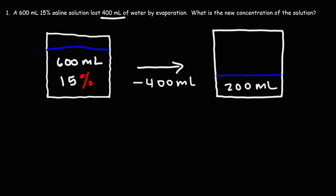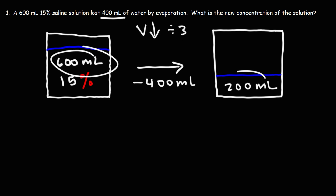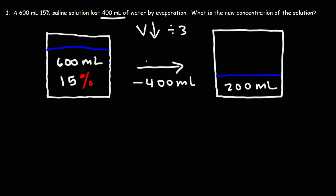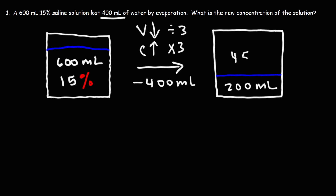What's going to be the concentration? Notice that the volume decreased by a factor of 3. If we go from 600 to 200, we need to divide 600 by 3 to get to 200. What that means is that the concentration is going to increase by a factor of 3. So if we multiply 15% by 3, the concentration of the new solution is 45%. And that's always going to happen with evaporation — evaporation is a process that will increase the concentration of the solution by the removal of the solvent.